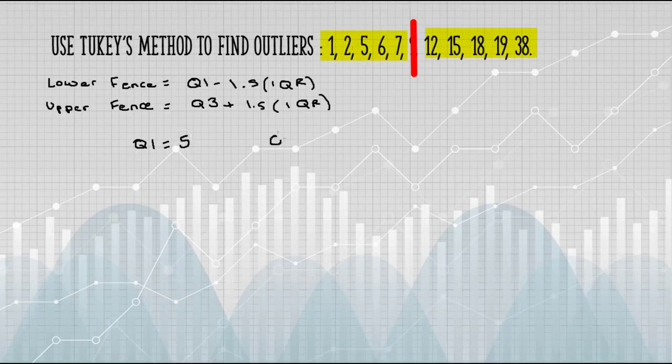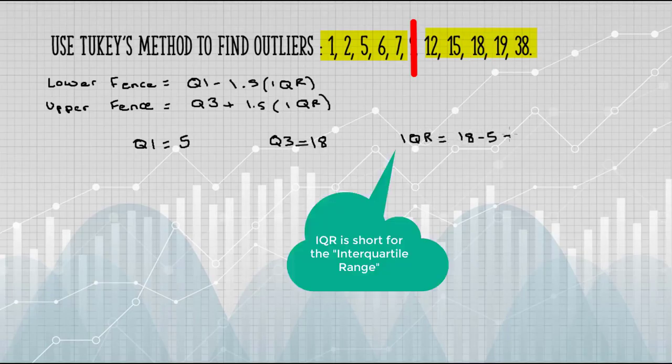Q3 is the median of the upper half, 18. Q3 minus Q1 gives us the IQR. That's 13.